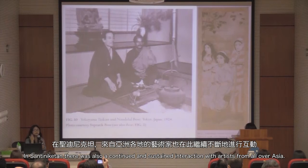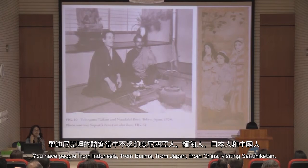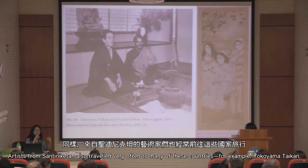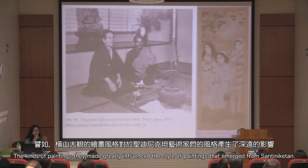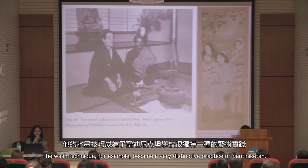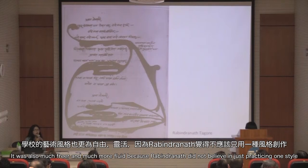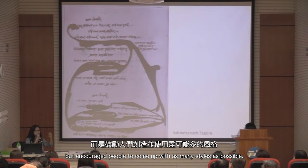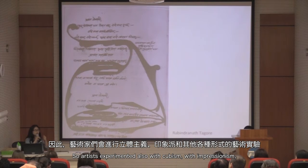In Shantiniketan there was a continued and sustained interaction with artists from all over Asia — from Indonesia, Burma, Japan, China visiting Shantiniketan, and artists from Shantiniketan also traveled frequently to many of these countries. For example, Yokoyama Taikan, and the kind of paintings they made greatly influenced the style of paintings that emerged from Shantiniketan. The wash technique, for example, became a very distinctive practice of Shantiniketan. It was also much more free and fluid, because Rabindranath Tagore did not believe in practicing just one style but encouraged people to come up with as many styles as possible. So artists experimented with cubism, impressionism, and many other forms as well.